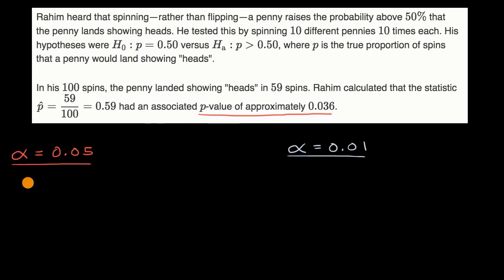And so in this scenario, we do see that 0.036, our p-value, is indeed less than alpha. It is indeed less than 0.05. And because of that, we would reject the null hypothesis.